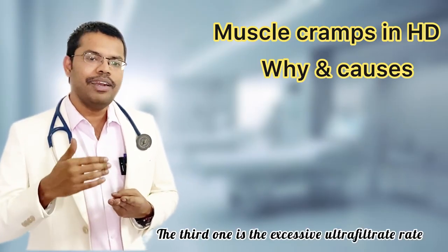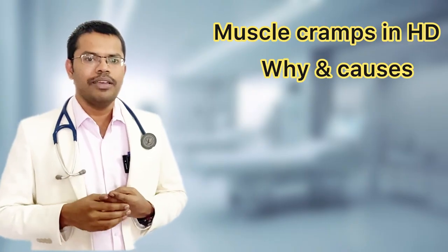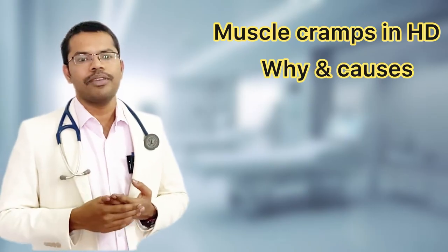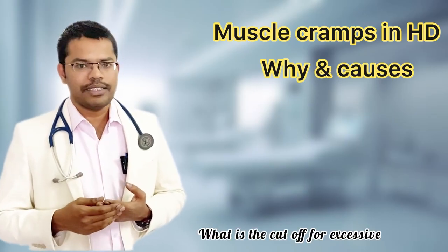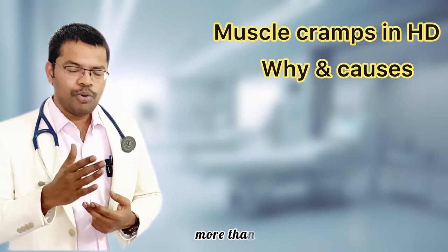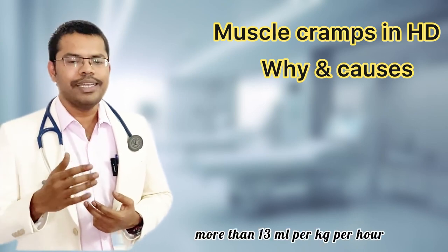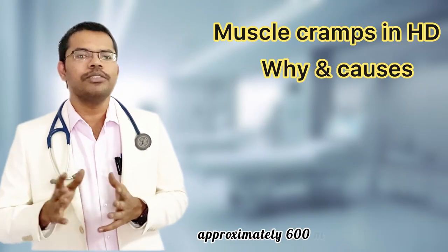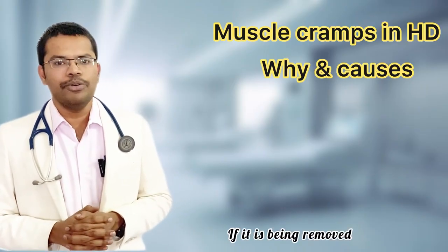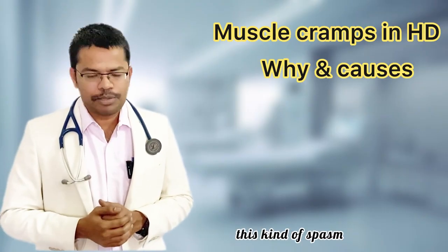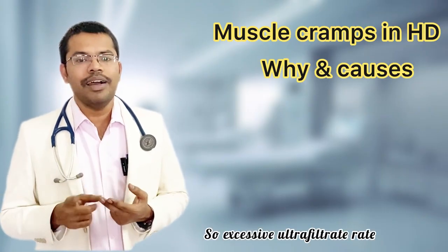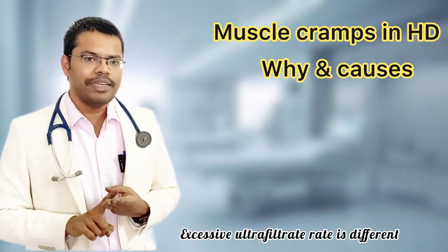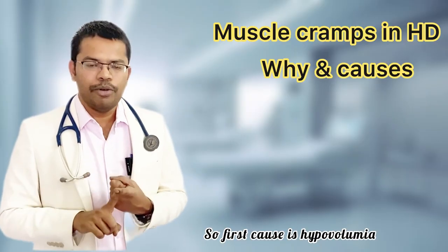The third cause is excessive ultrafiltration rate — whenever the water being removed from the patient is excessive. What is the cutoff for excessive? Theoretically, more than 13 ml per kg per hour — on average you can remember it as approximately more than 600 ml per hour. If that much is being removed, there is a high chance the patient might develop this kind of spasm. Note that hypovolemia and excessive ultrafiltration rate are different causes.